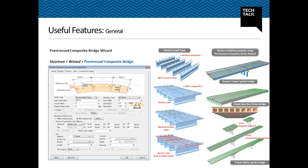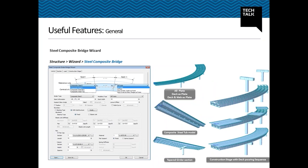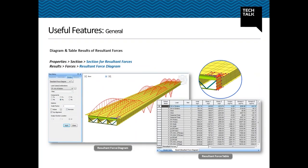Automatic generation of the model including boundary conditions and construction stages is possible, considering time-dependent material properties. This includes prestressed concrete composite wizard and steel composite bridge wizard. The resultant force diagram and table results are provided to show the result of 2D plate elements in terms of 1D beam element results.